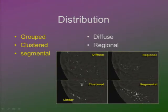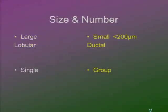Regarding size and number: the larger they are, the better. If they are small, they're probably ductal. If they're single, they're probably benign. If they come in a group, they're suspicious.